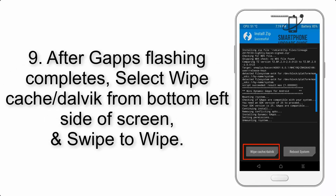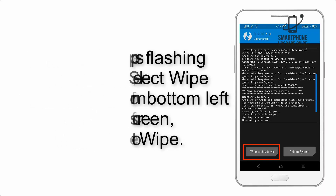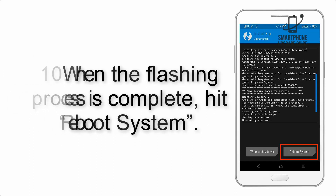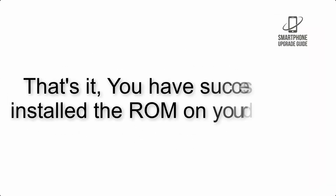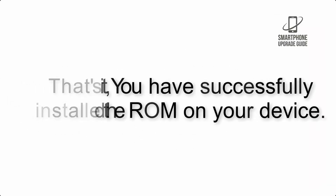Step 9: After GApps flashing completes, select Wipe Cache and Dalvik from the bottom left side of the screen and swipe to wipe. Step 10: When the flashing process is complete, hit Reboot System. That's it — you have successfully installed the ROM on your device.